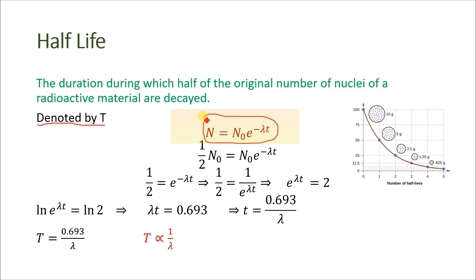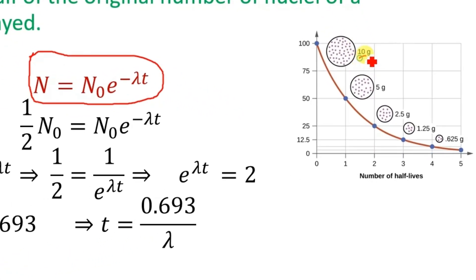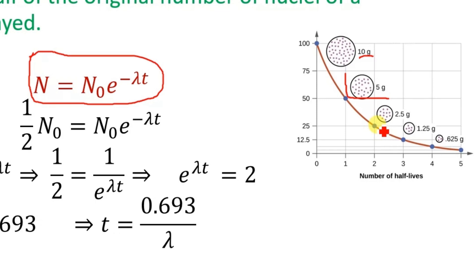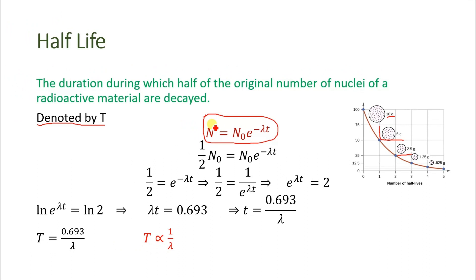The radioactive decay law states that a radioactive material decays exponentially with time. Suppose we have a radioactive material that is 10 grams — after every half-life it reduces to half. For example, if initially it is 10 grams, then after one half-life the remaining material will be 5 grams, and after another half-life it will reduce to 2.5 grams, and so on.